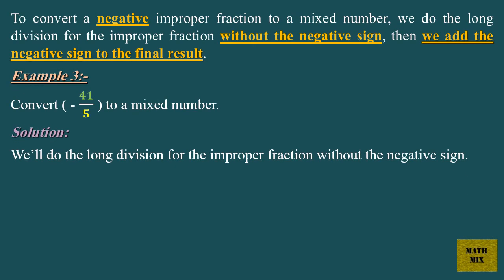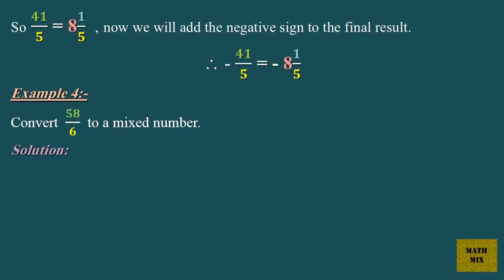To convert a negative improper fraction to a mixed number, we do the long division for the improper fraction without the negative sign, then we add the negative sign to the final result. Example 3: Convert minus 41 over 5 to a mixed number. We'll do the long division for the improper fraction without the negative sign. So 41 over 5 equals 8 and 1 fifth. Now we will add the negative sign to the final result. Therefore, minus 41 over 5 equals minus 8 and 1 fifth.